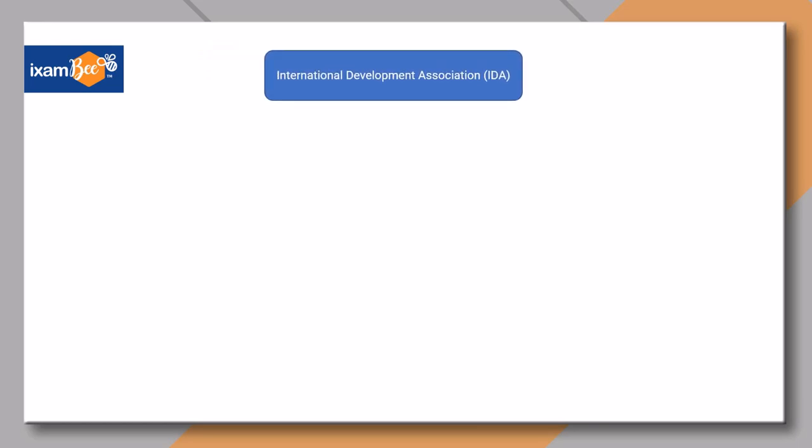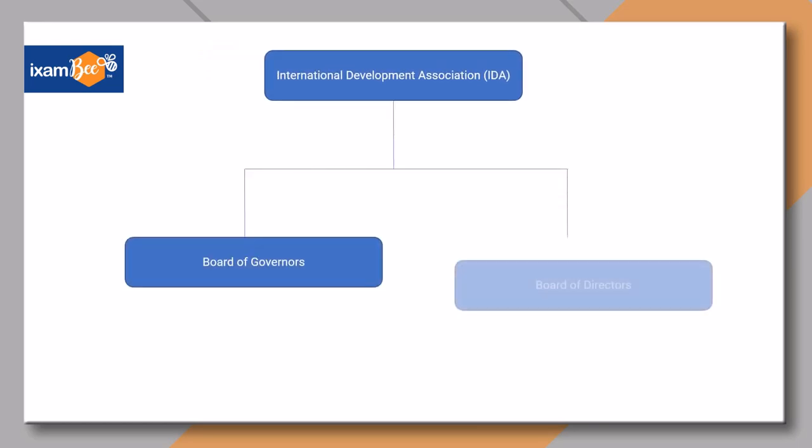The two governing bodies of IDA are Board of Governors and Board of Directors. The Board of Governors consists of one governor and one alternate governor appointed by each member country.